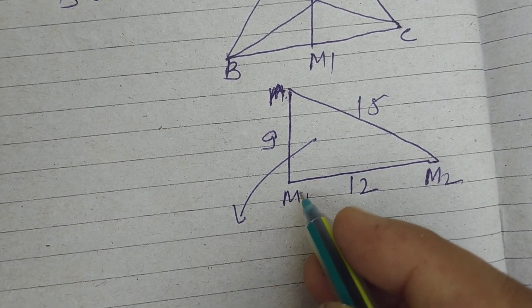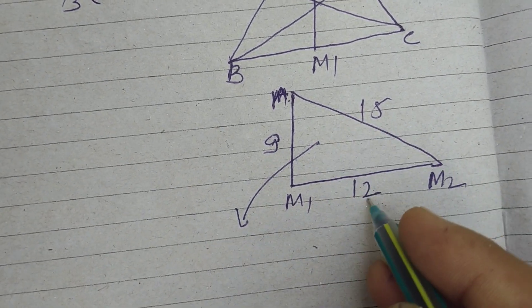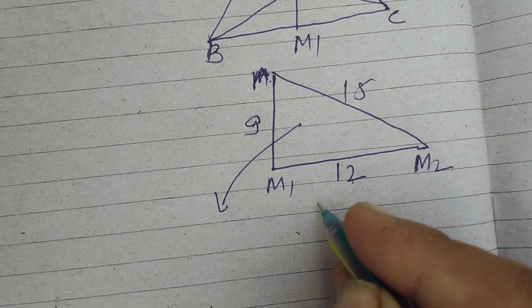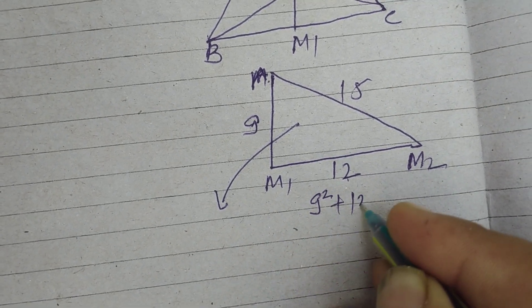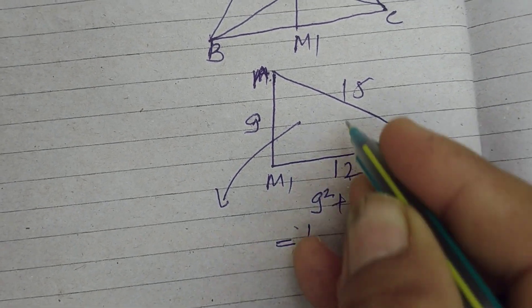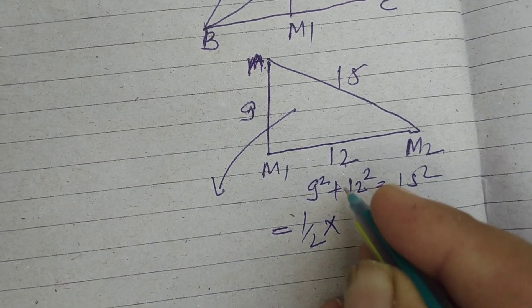Since these sides are in Pythagorean triplet, 9 square plus 12 square equal to 15 square. So area of this triangle formed by the median is half base into height.